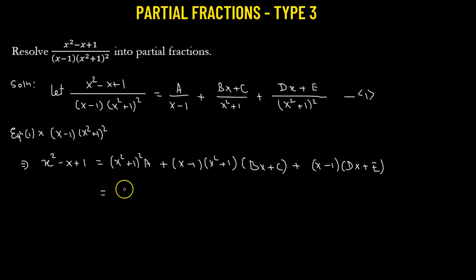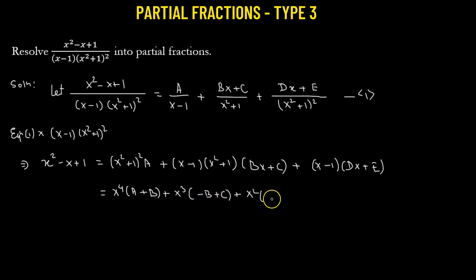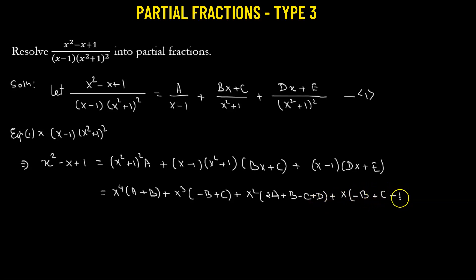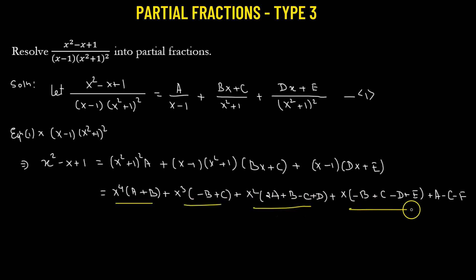Stating the final expanded result: the x to the power of 4 term has coefficient a plus b; the x cubed term has coefficient negative b plus c; the x squared term has coefficient 2a plus b minus c plus d; the x term has coefficient negative b plus c minus d plus e; and the constant term is a minus c minus e.